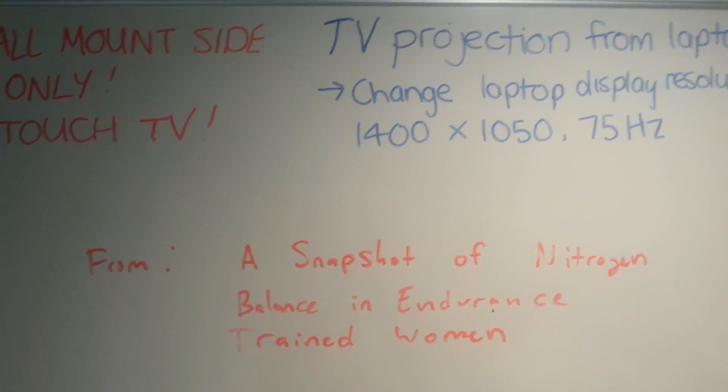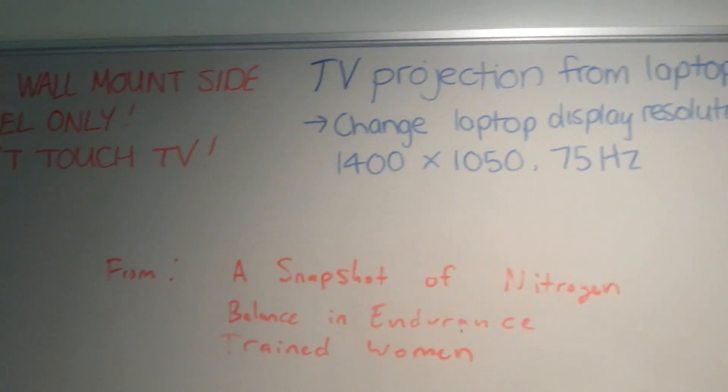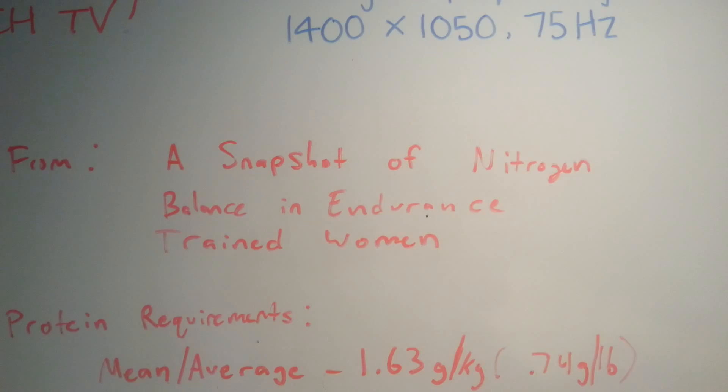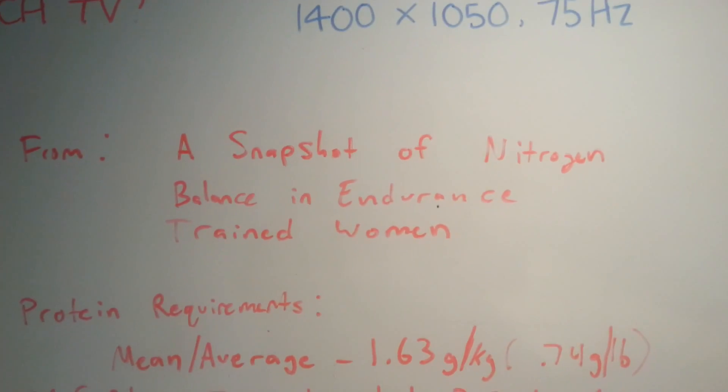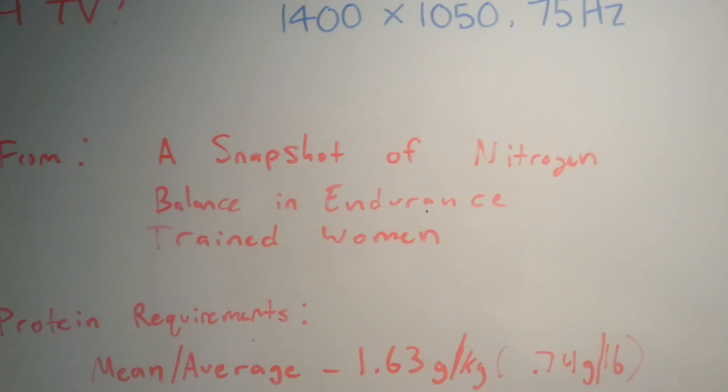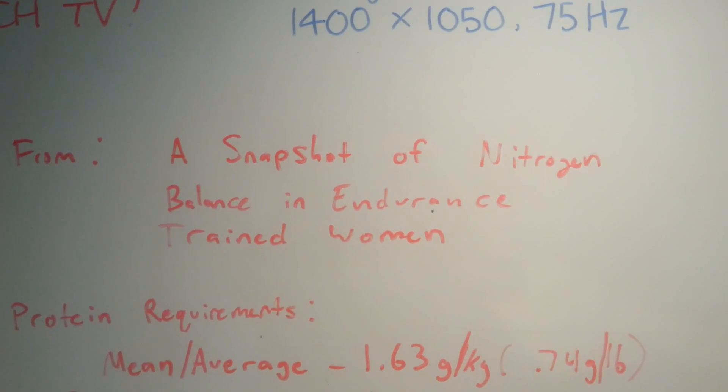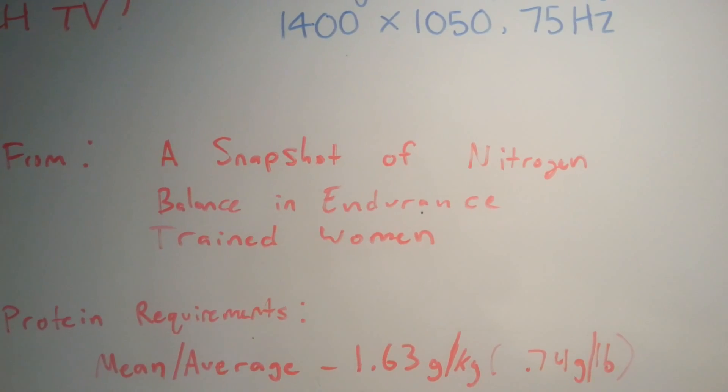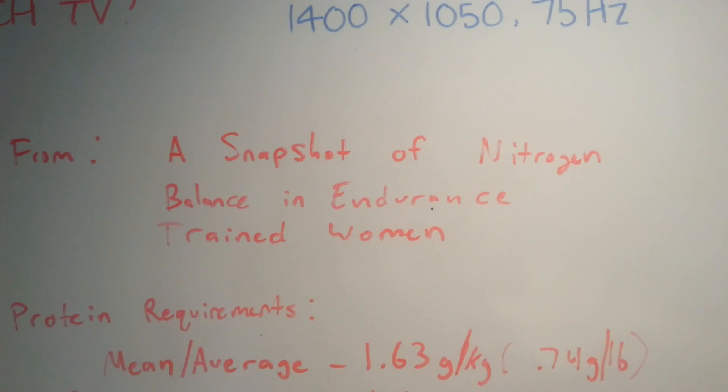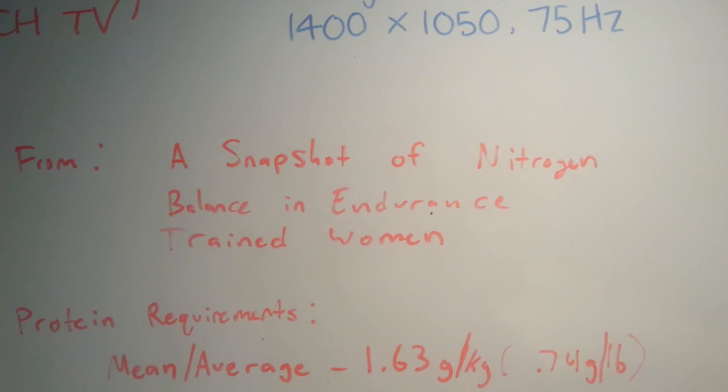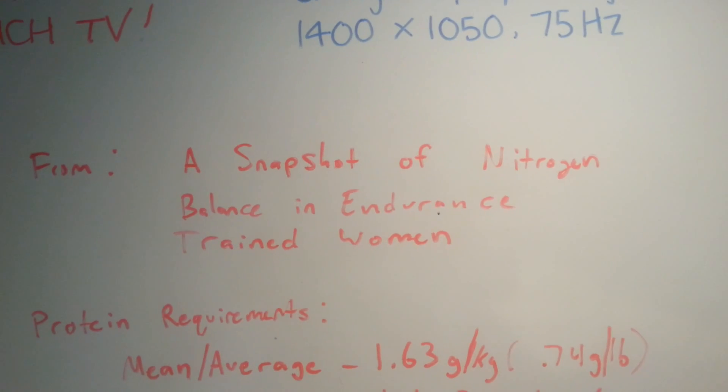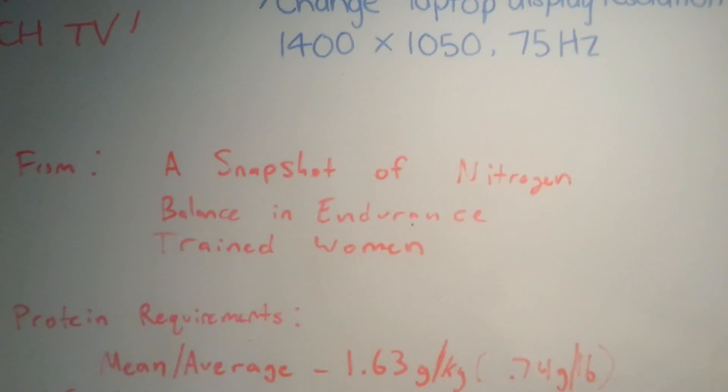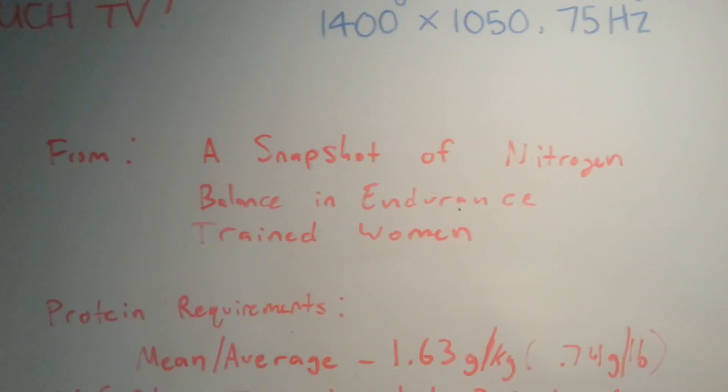The first thing they report is the mean average protein requirement in the subjects. That means they figure out each one of these subjects' nitrogen balance requirements for protein and then average them. So if there's 20 people, they add all of their different protein intakes together and divide it by 20. They found the average requirement for endurance-trained women in a period of hard training is about 1.63 grams per kilogram, which for you Americans out there is 0.74 grams per pound.